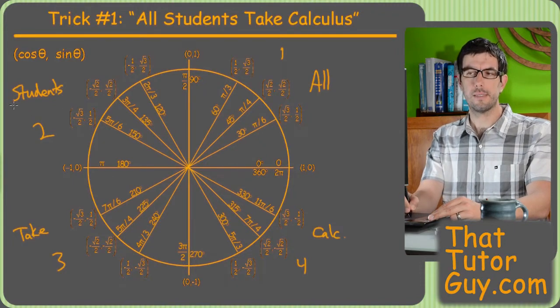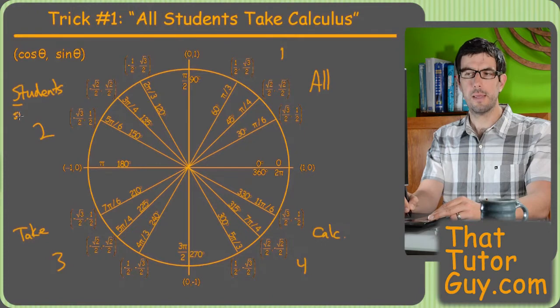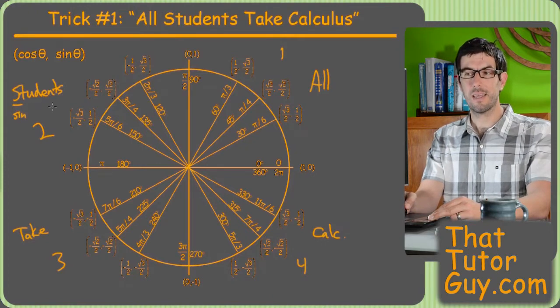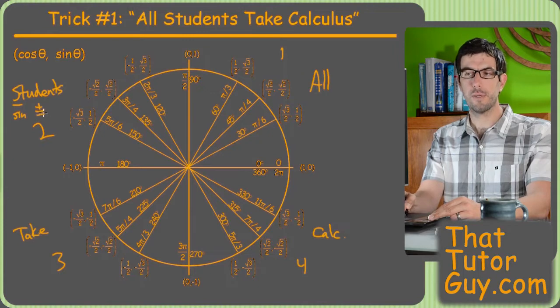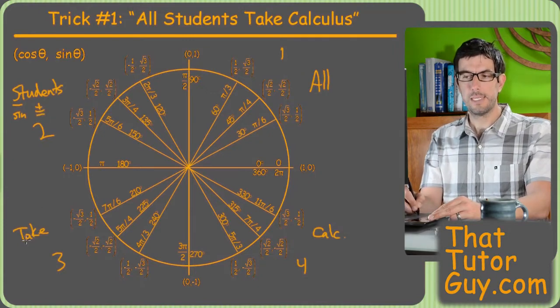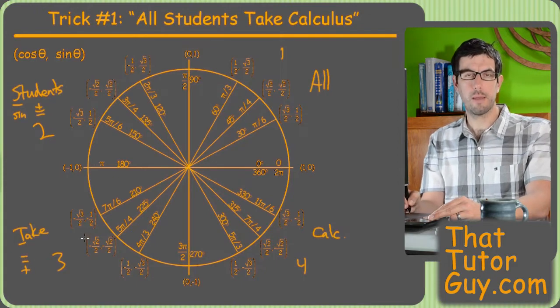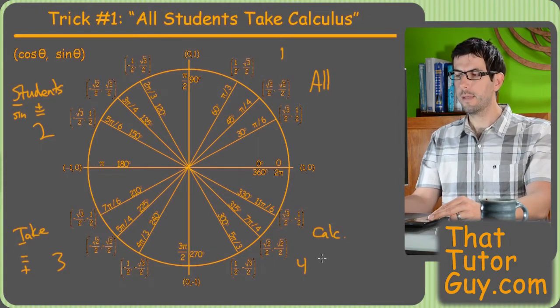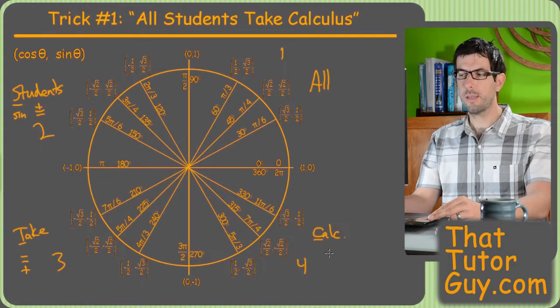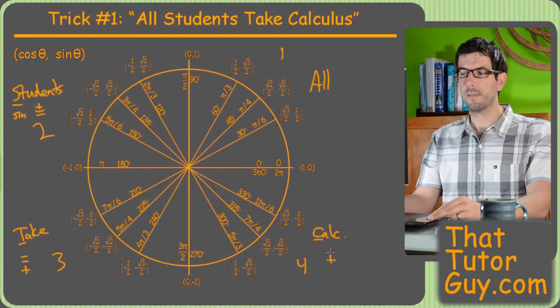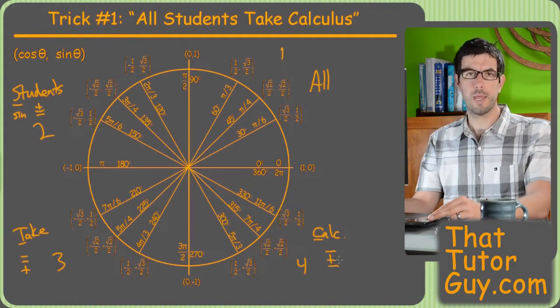So the S in students stands for sine, meaning that sine is the positive one in that quadrant and the other two are negative. So cosine and tangent are negative. Take stands for tangent, which means that tangent is the positive one and sine and cosine are both negative. And then C stands for cosine, which means that cosine is positive but sine and tangent are both negative.